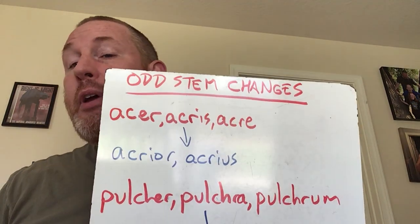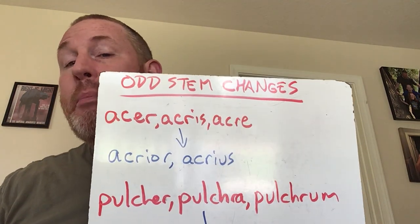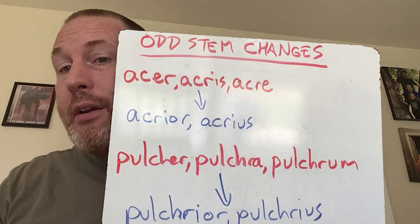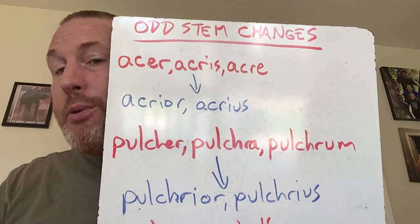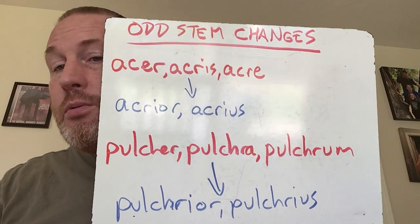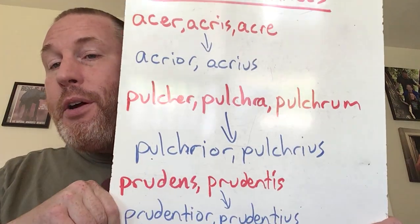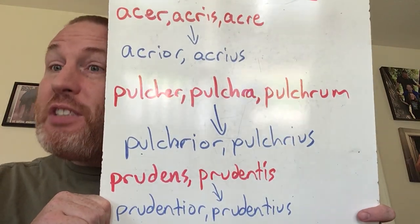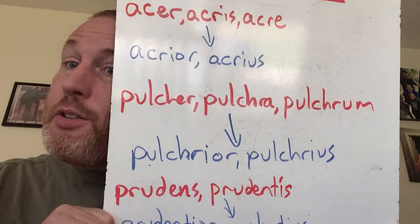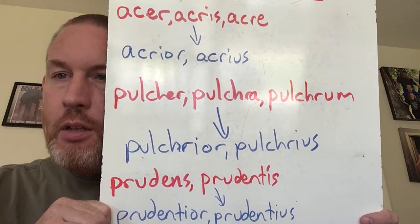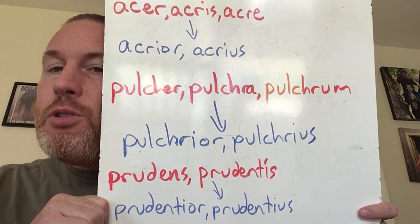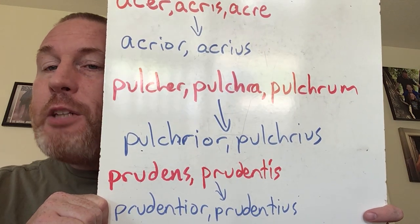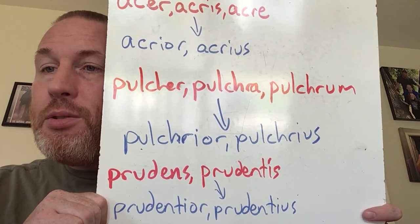Now we talk about pulcher, pulchra, pulchrum, and it seems to hold the pattern. You go to the second part, the feminine, and it's pulchrior or pulchrius. Then we have prudens, prudentis. So if you have a single termination or a participle, you're going to go to the genitive singular to get the stem, and it's prudentior, prudentius.